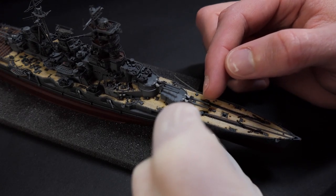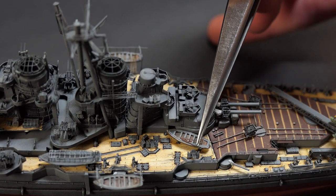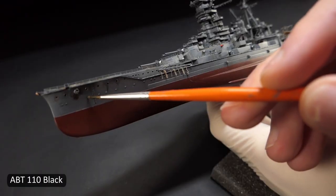The photo etched set even came with little oars for the rowboats. Very cool and a nice touch.